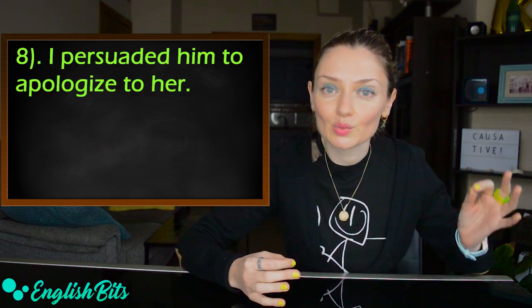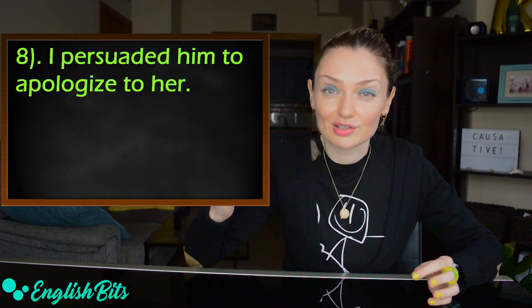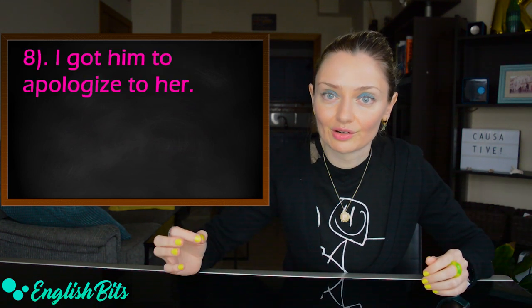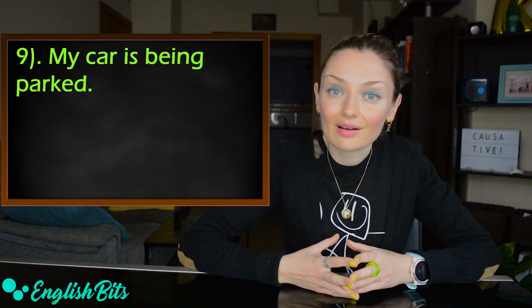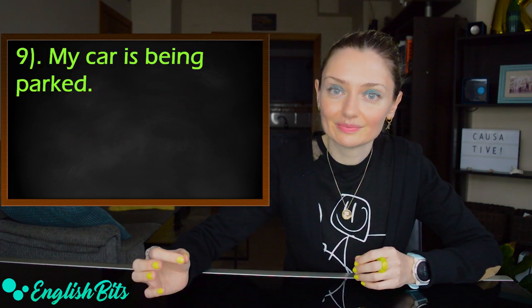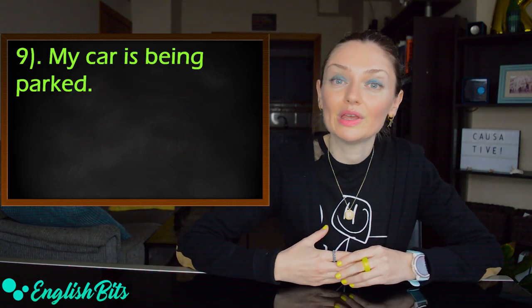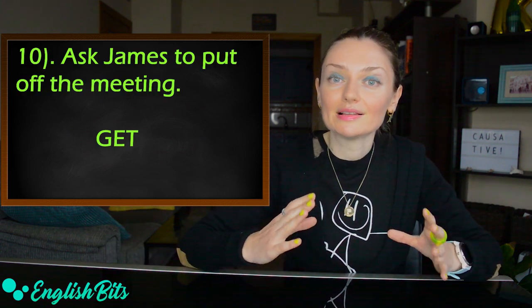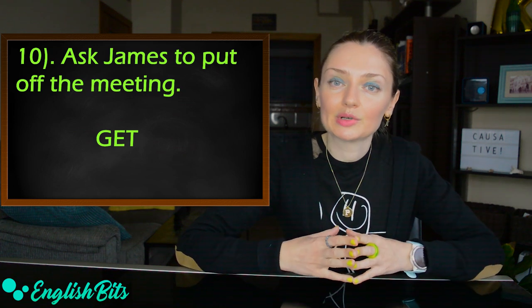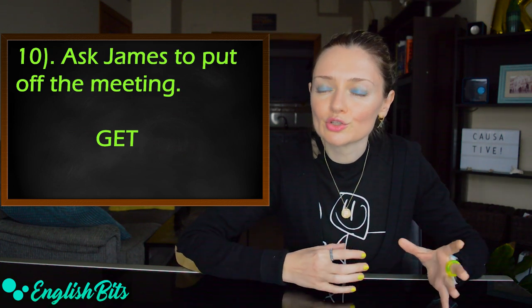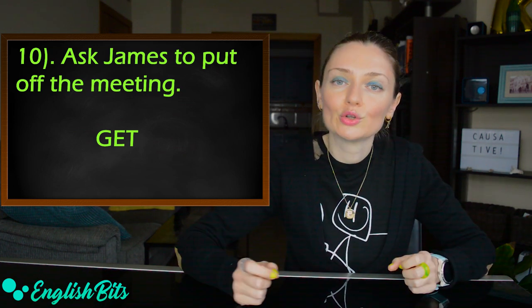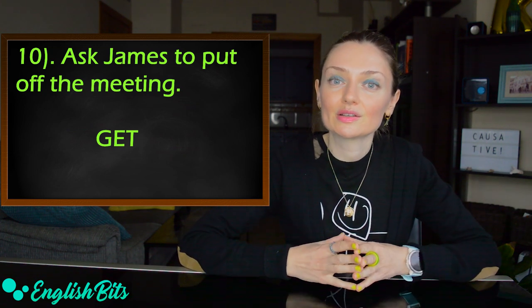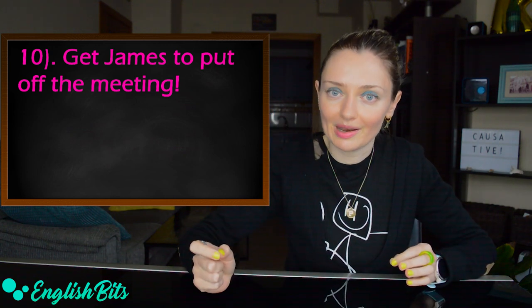Number eight: I persuaded him to apologize to her. And the correct sentence would be: I got him to apologize to her. Number nine: My car is being parked. And a similar sentence would be: I'm having or I'm getting my car parked. And last but not least, number 10: Ask James to put off the meeting. I want you to use the verb to get. And the correct sentence would be: Get James to put off the meeting.